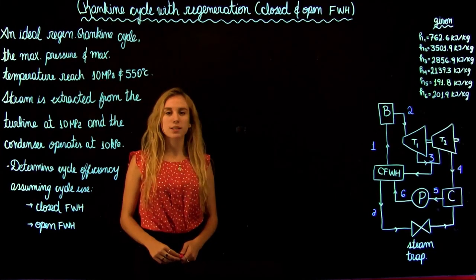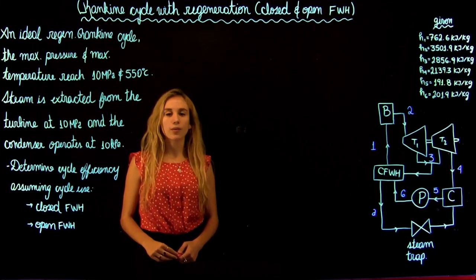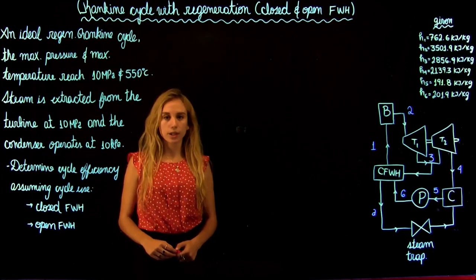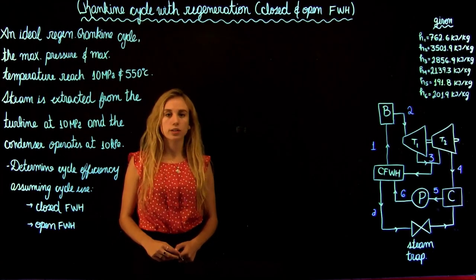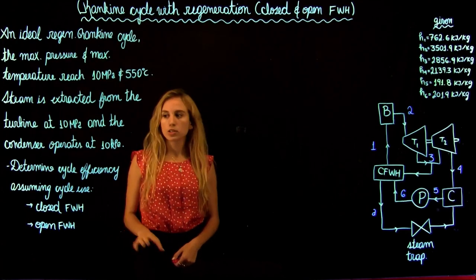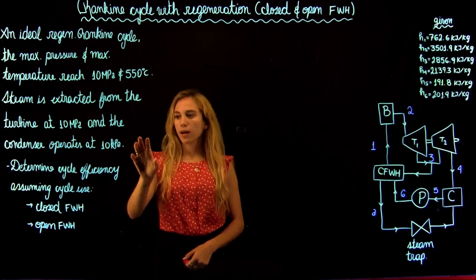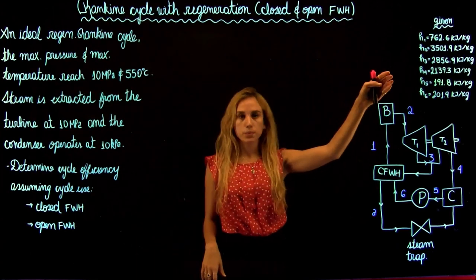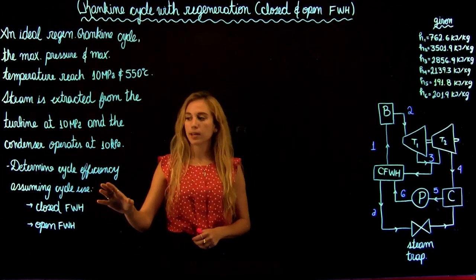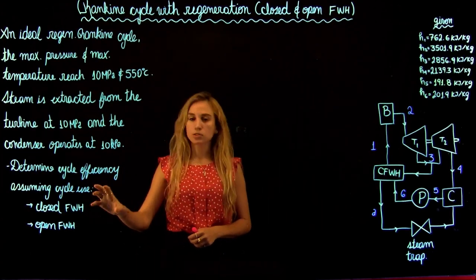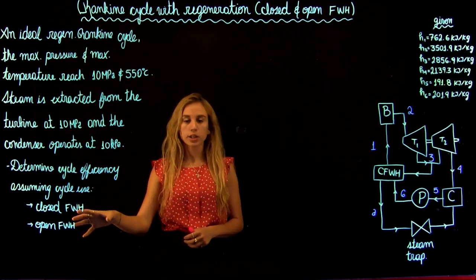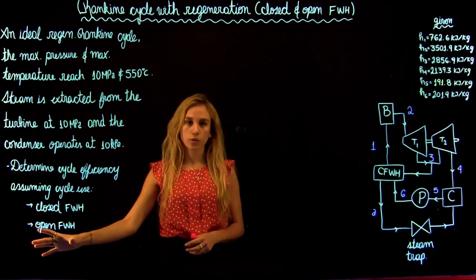Hello and welcome to Thermodynamics 2 tutorials with Maria. We're going to be solving a Rankine cycle with real regeneration that has an open feed water heater and also a closed feed water heater. We are given a problem with different values and all the enthalpies, and we are asked to find the cycle efficiency assuming first a closed feed water heater and then an open feed water heater.